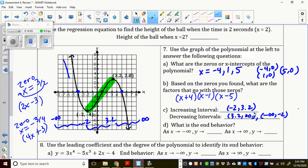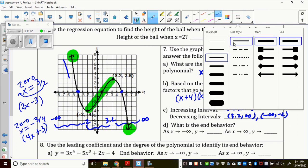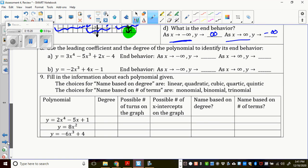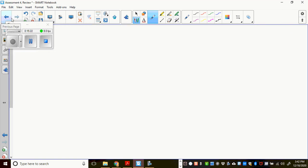Alright, the end behavior. So remember, the end behavior is asking about the ends of the graph. Okay, so I see the left side's going up, and the right side's going down. So when I look at that, I say to myself, when x is going to negative infinity, that's the left side. So that means the y value is going up. When x is going to positive infinity, that means the right side, and the y value, it's going down. Okay? Alright. Let's see. So, good. Almost done.